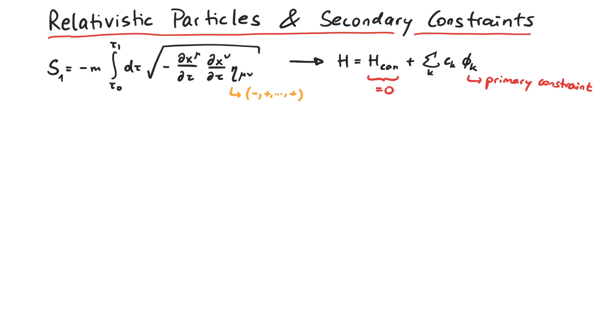In this video, we want to introduce a different Lagrangian, one that does not lead to primary constraints. And here it is. You'll notice that we not only have x, but also an additional variable called e. e is an auxiliary variable that does not have a proper equation of motion and thus will not introduce any new dynamics into the system.